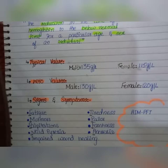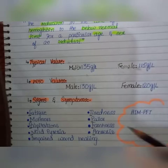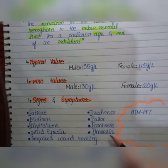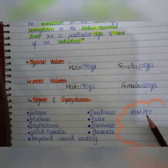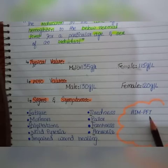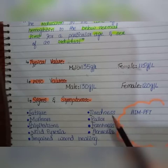A helpful mnemonic is MPFT: A for anorexia, I for impaired wound healing, M for murmurs, P for pallor and palpitations, F for faintness, and T for tiredness. This mnemonic helps you easily remember all the signs and symptoms of an anemic person.